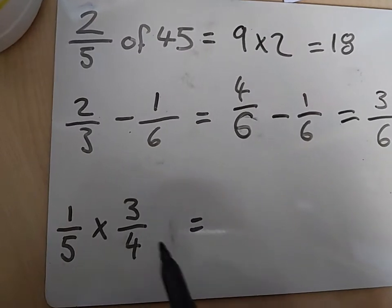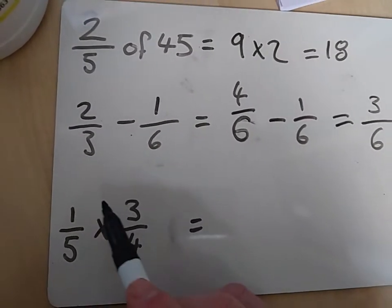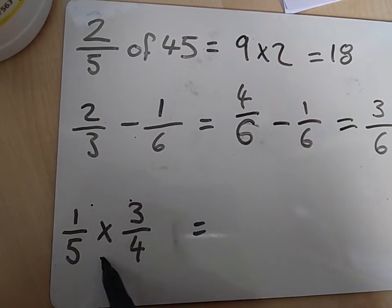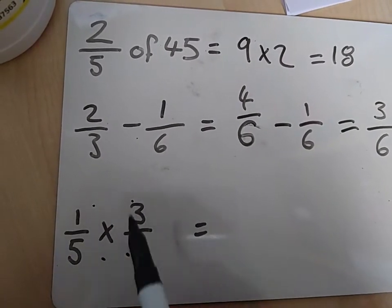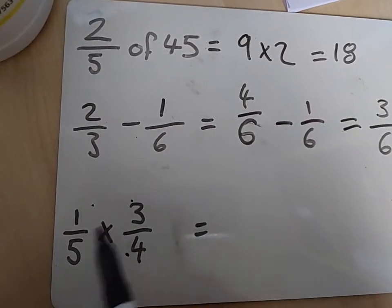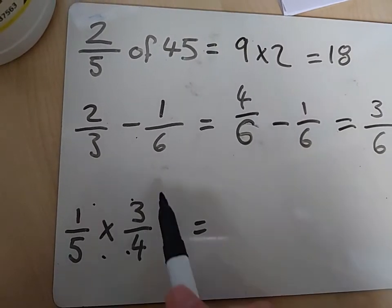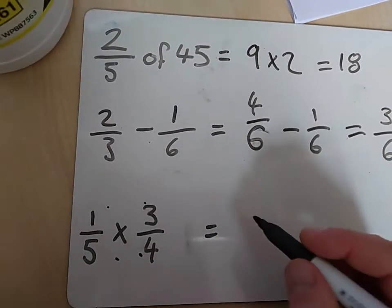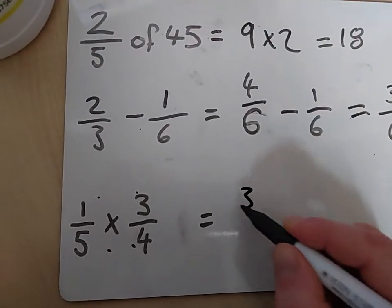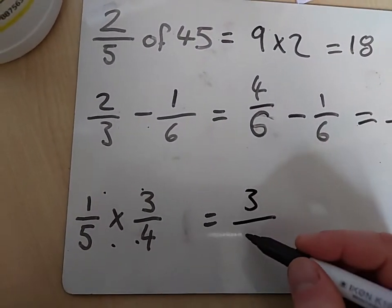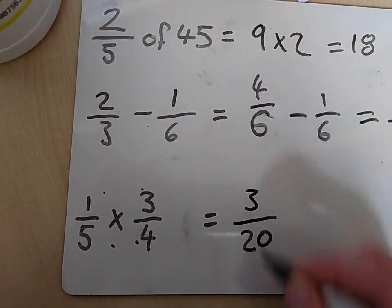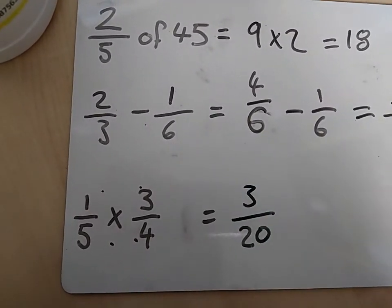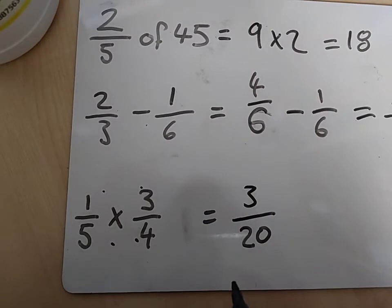Multiplying and dividing fractions is slightly different. It's actually a little bit easier because you just do 1 times 3 and then 5 times 4, times the top numbers together, times the bottom numbers together. If it was division, you do 1 divided by 3, 5 divided by 4, whatever it is. So that's that easy. 1 times 3 is 3, 5 times 4 is 20. I can't make that smaller, so 3/20 is the answer.